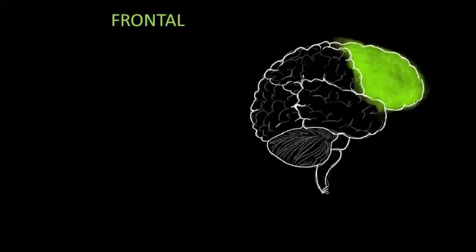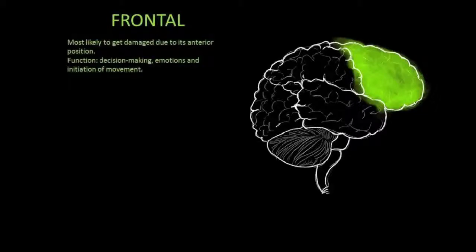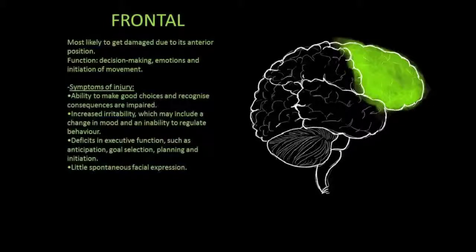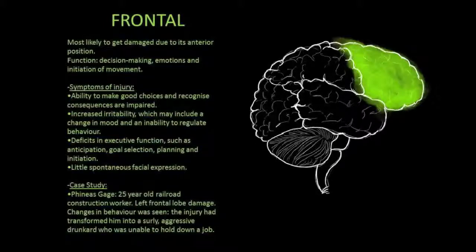Now let's begin with the frontal lobe. The frontal lobe is involved in decision making, emotions and initiation of movement. Since it occupies the most anterior position of the brain, it is the lobe most likely to get damaged. Damage to the frontal lobe will result in the inability to make good choices and recognize consequences, increased irritability in behavior, and little spontaneous facial expression. One famous case study is Phineas Gage, a 25-year-old railroad construction worker who suffered left frontal lobe damage. The damage transformed him into a rude and aggressive man who was unable to hold down a job.